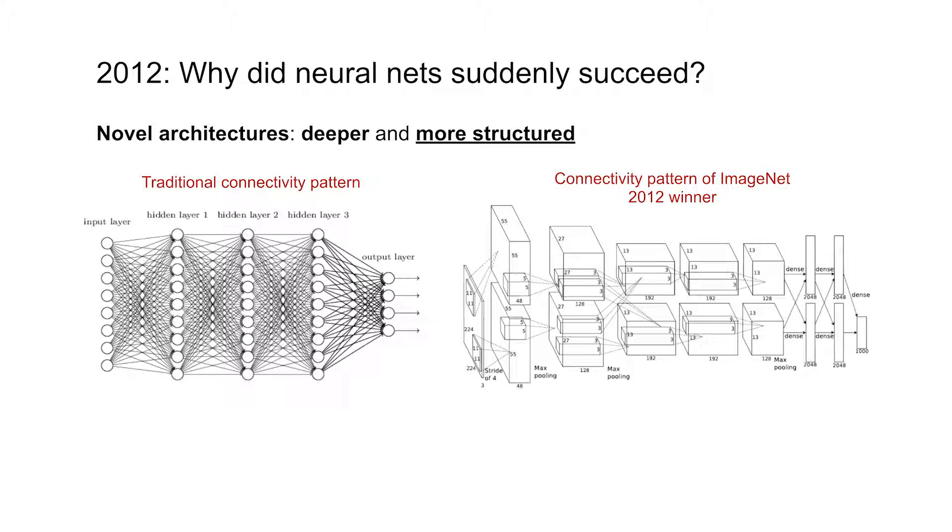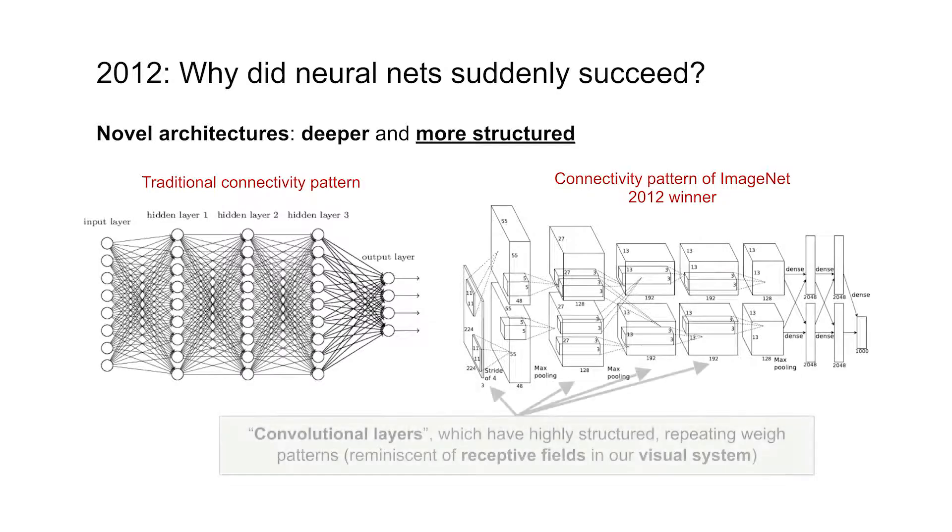I should also add, especially for image tasks, including ImageNet, what's often used are so-called convolutional layers. Convolutional layers have very structured, repetitive weight patterns, and so they also impose a kind of constraint on the neurons and impose a certain kind of structure on the connectivity pattern that's possible for the neural network.